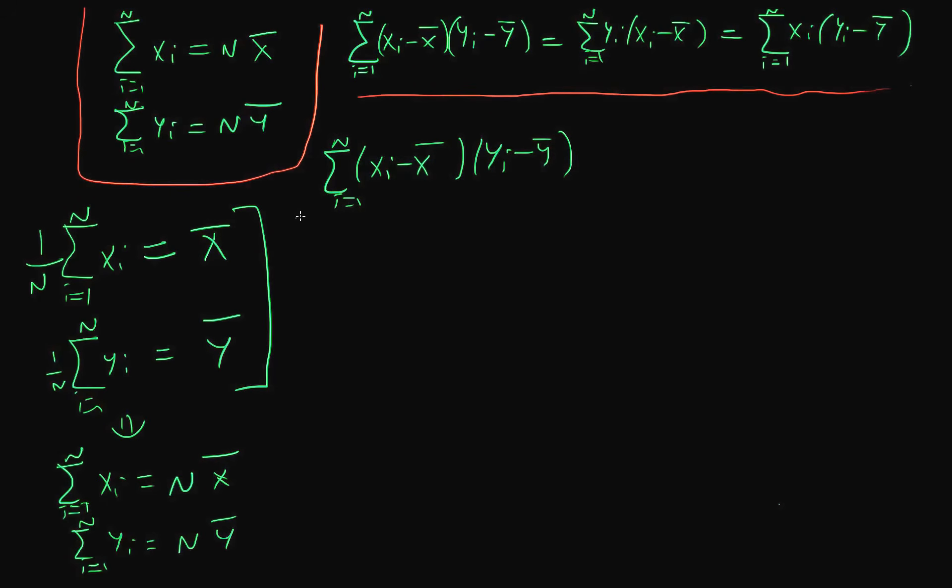We can expand this just as we would any parenthesis by multiplying it out. That's the sum from i equals 1 to n of xi yi minus xi y bar minus x bar yi plus x bar y bar. It's plus because I've got a minus times a minus. As with any summation sign, because it's a linear function, I can write this out explicitly in terms of the individual terms.